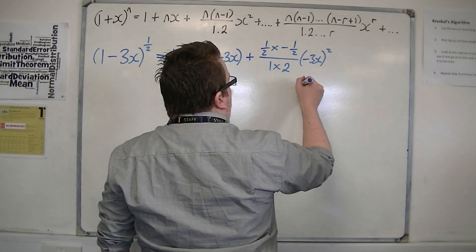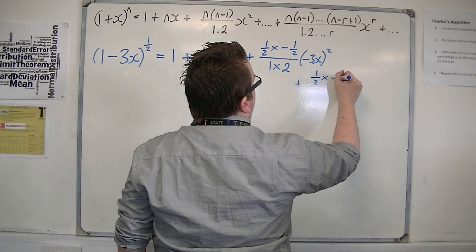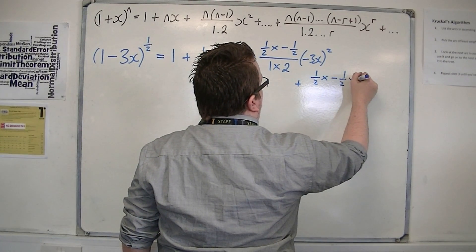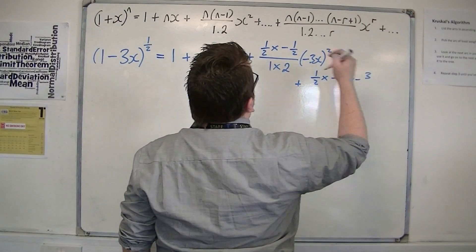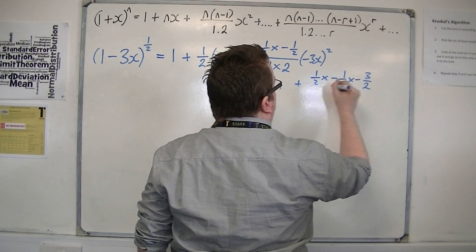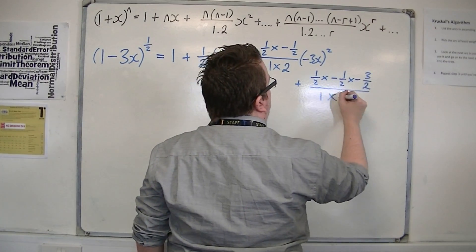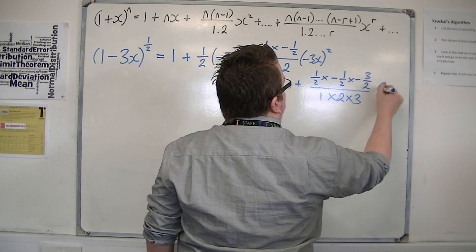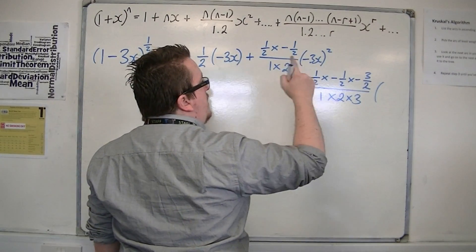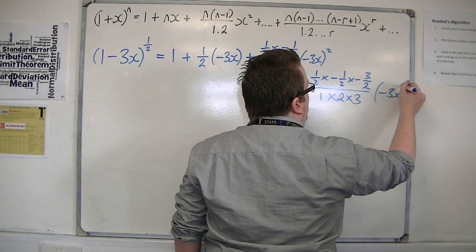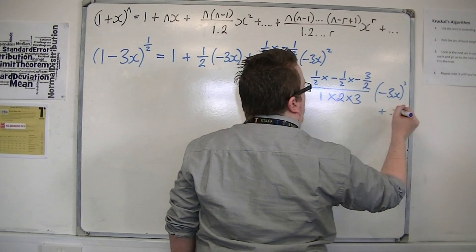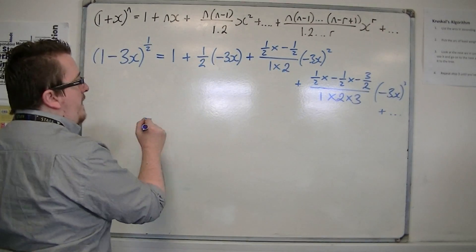Then the next term: 1/2 times -1/2, take away another 1, so it's -3/2, all over 1 times 2 times 3. x to the power of 3, so (-3x) cubed, plus other terms. I'm not going to go any further than that.